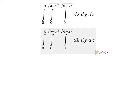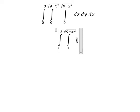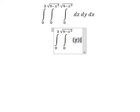We see that we have only dz, so in this situation we have only z and we put the bounds from zero to the square root of nine minus x squared.